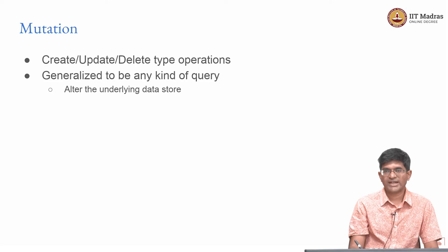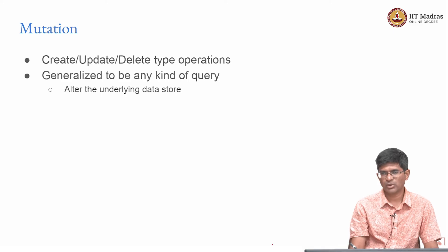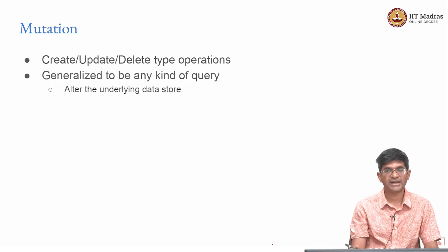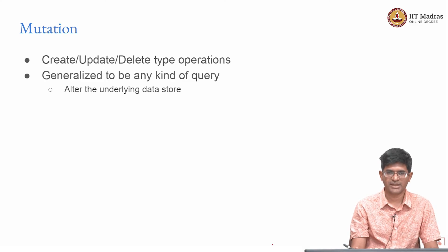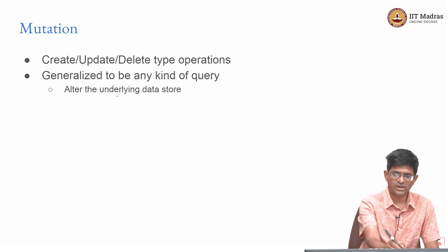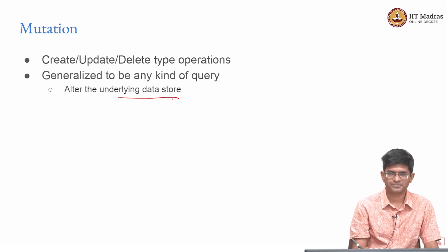These queries are not just for retrieving data — you can also use them to mutate data, similar to the concept of mutations in Vue state management. A mutation means something that changes data. In GraphQL, mutations actually update information at a database backend. All of the CUD — create, update, delete — part of CRUD can be done through mutations in GraphQL, generalized to any kind of query that alters the underlying data store.